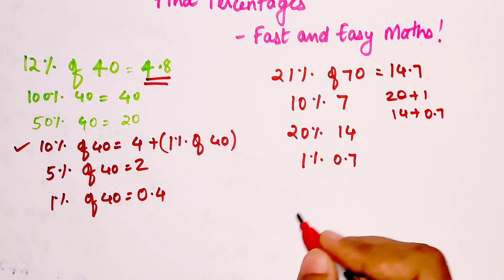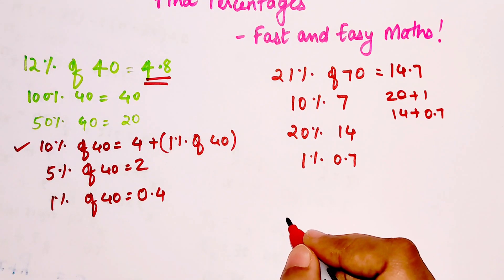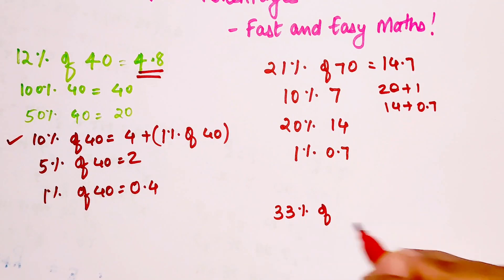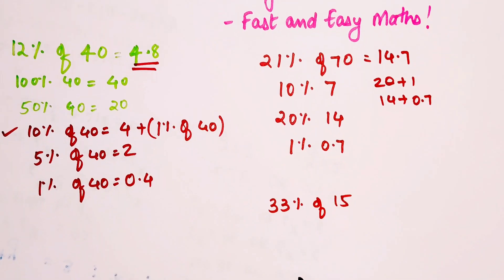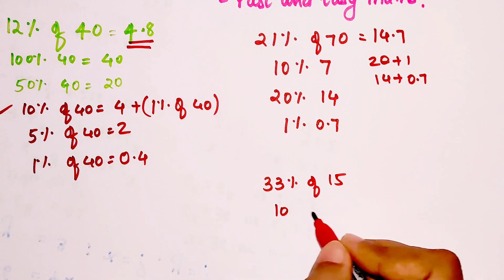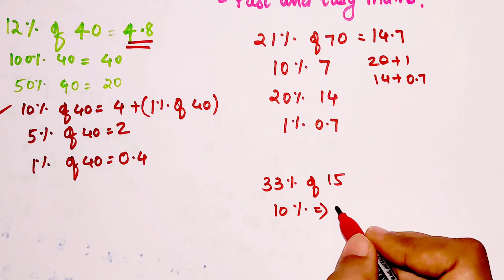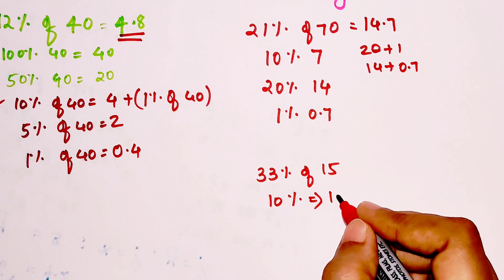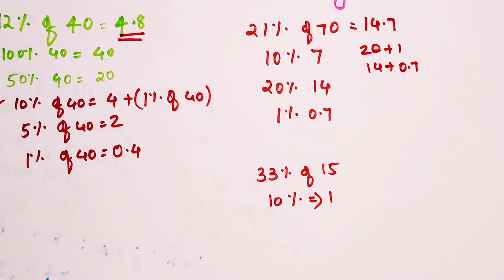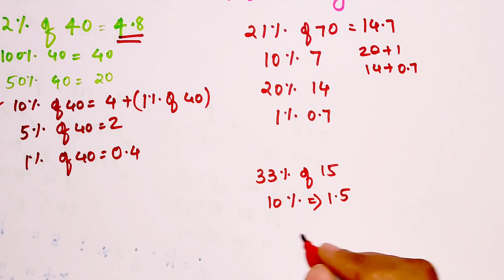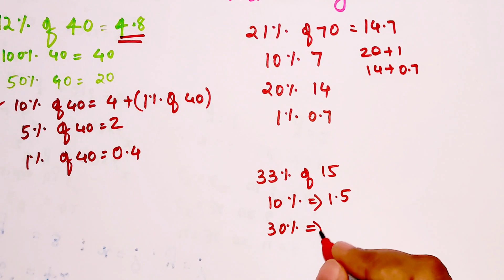Now let's try for another one or let's try for something in decimals. So let's say what is the answer of 33% of let's say 15. So now please understand we have 10% as nothing but 1.5.